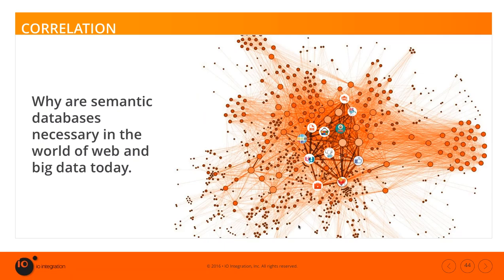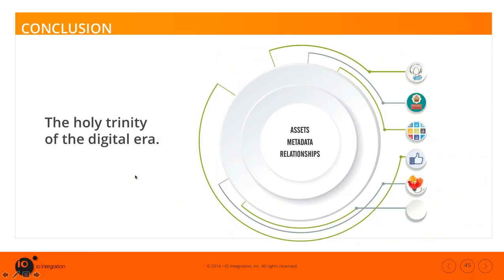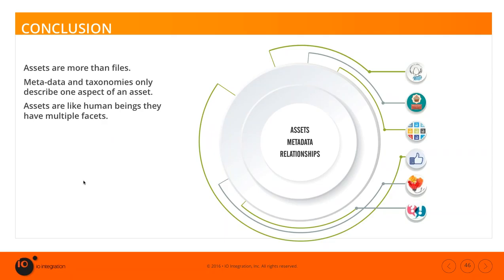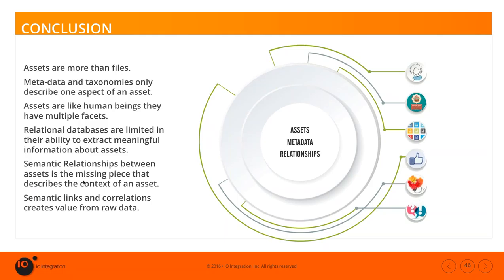Semantic databases are necessary because today's world has a huge network of assets that are all interrelated. That complexity is only going to increase, and it's not easy for a human mind to navigate alone. The only tools capable of extracting meaningful content from this network are semantic databases. The holy trinity of the digital era are assets, metadata, and their context — their relationships to each other. We need a nuanced understanding of how they interoperate. Metadata and taxonomies only describe one aspect of an asset, and assets are more complex than just a file or a group of files — more like human beings in that they have multiple facets and mean different things in different contexts.